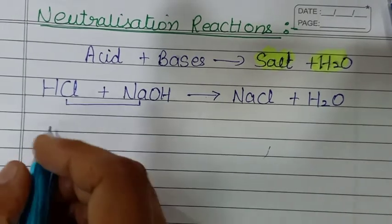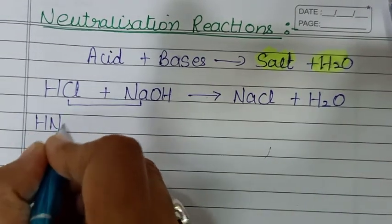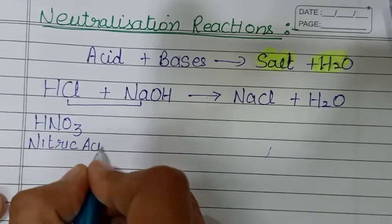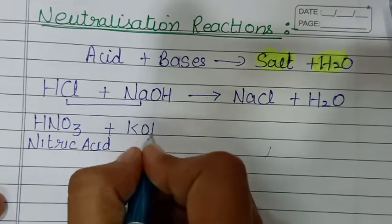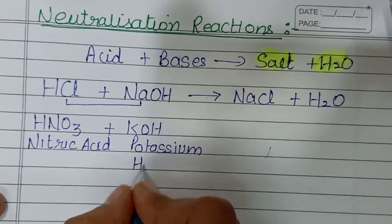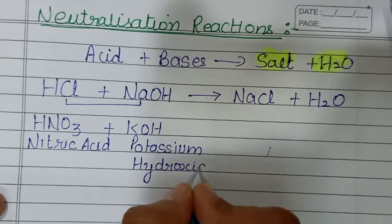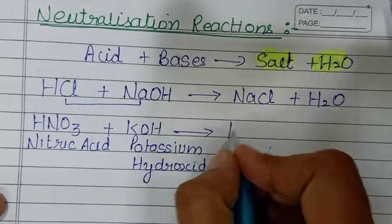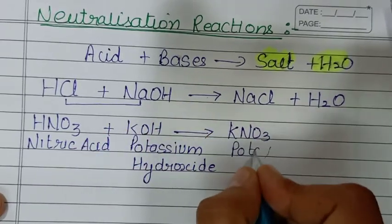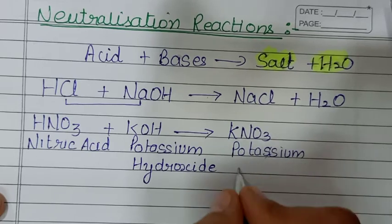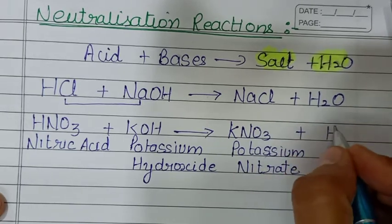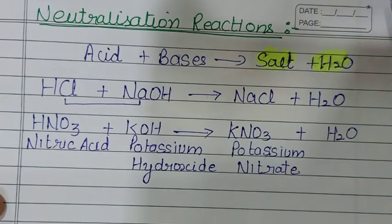Another example: HNO3 — nitric acid — plus KOH, potassium hydroxide. K pairs with NO3 to give KNO3; name is potassium nitrate. Products: potassium nitrate plus water.